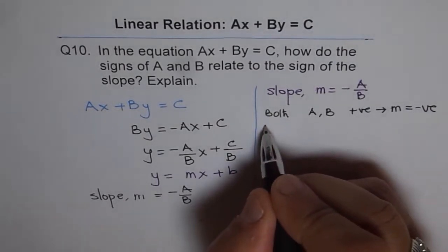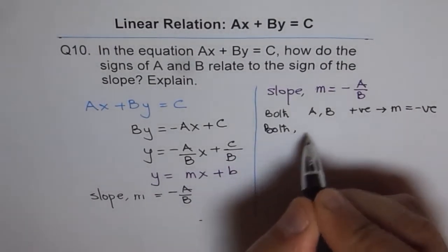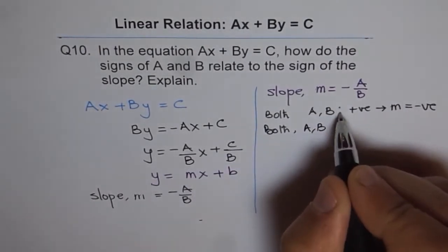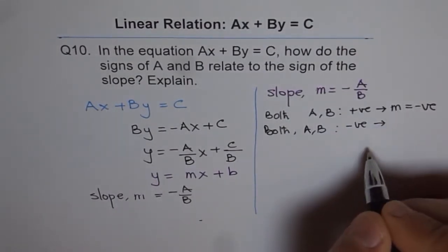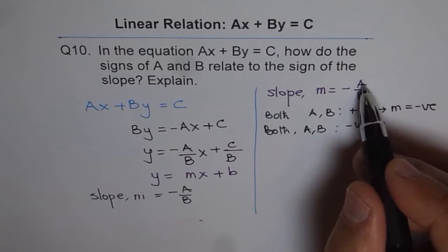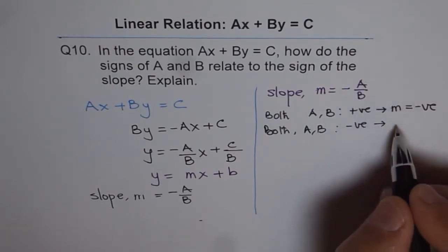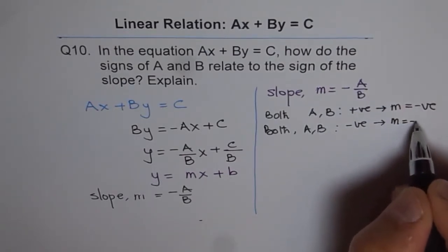But if both A and B are negative, in that case, what happens to slope? If they're negative, their negative signs will cancel off and still, we get slope as negative.